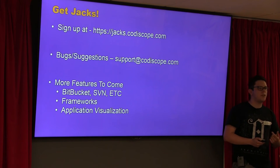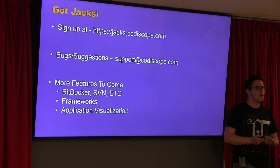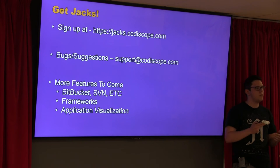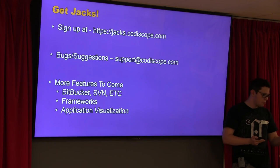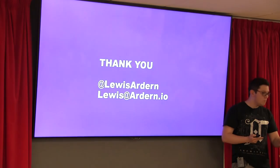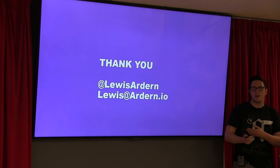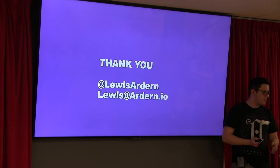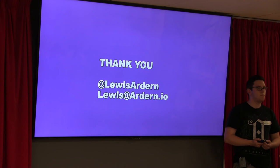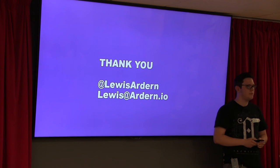There's also going to be application visualization, which is going to be quite nice. At the moment you just get a raw code stack and don't really know what is working where. The tool will start building a view saying these functions are talking to this function, so you can get a visible representation. That's pretty much it — hopefully you like the look of Jax. Go and check it out at jax.codascope.com. And if you have any issues, shout out to the team.